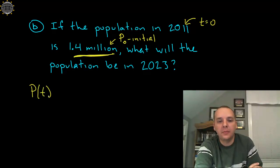We have P of T equals our initial census of 1.4 million. I'll just keep these units in millions. E to the 0.0325 T.